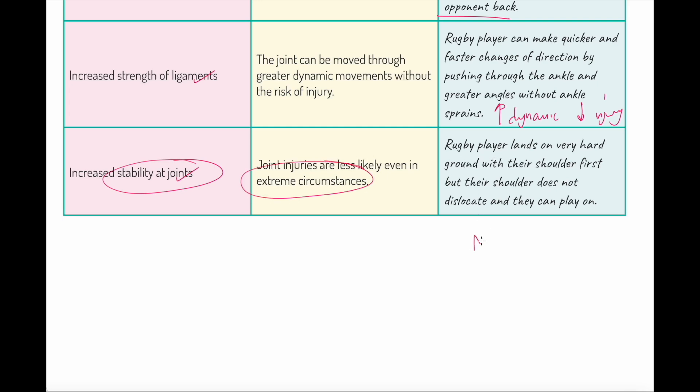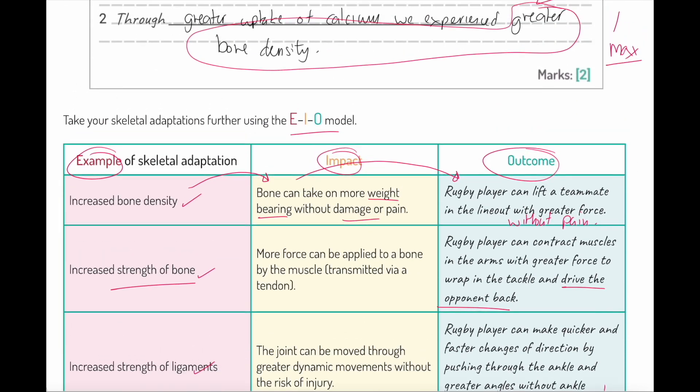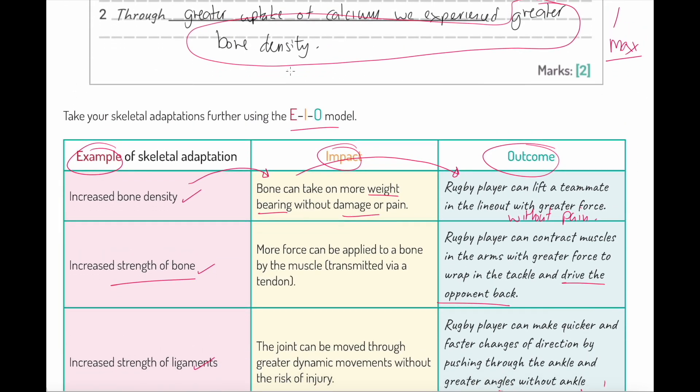Let's imagine this rugby match has been played in May, a sevens tournament, and they're landing with their shoulder on the ground. They do not dislocate—that is the outcome and they can play on, win the match, score the winning try. My point is this: when you're writing your adaptations, go for your example adaptation, the impact it has, and what does that have as an outcome on performance. In this case, I've used rugby as my particular example.